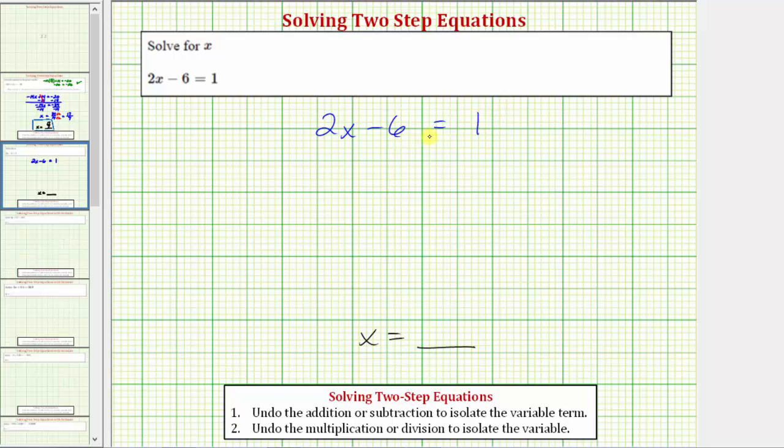Looking more closely at the left side of the equation, in order to isolate x, we need to undo this multiplication and undo the subtraction. Because we have two operations to undo, this is often called a two-step equation.